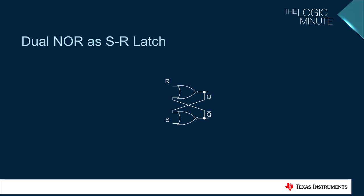This will give us the ability to set and reset the output by controlling two pins. Now we can insert the SR latch into our alarm circuit. The S input, or set input, is connected to the trigger event and the R input, or reset input, is connected to a push button.